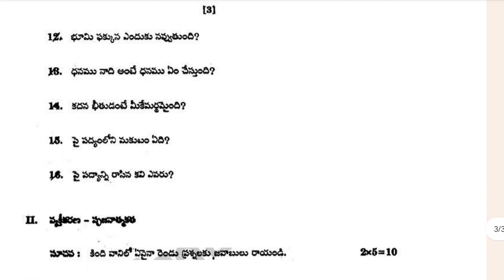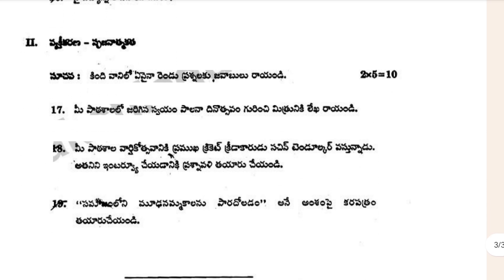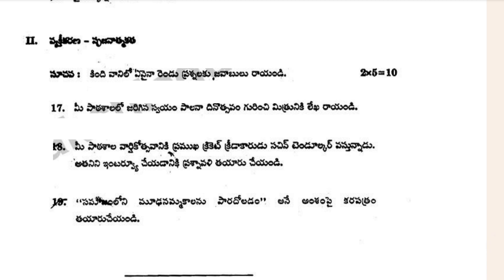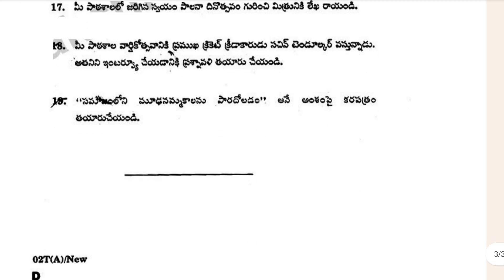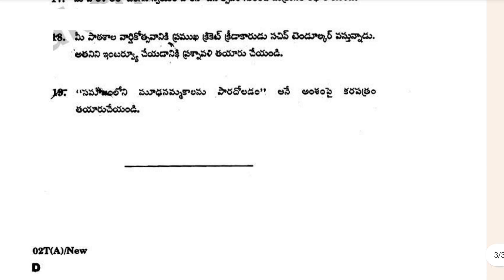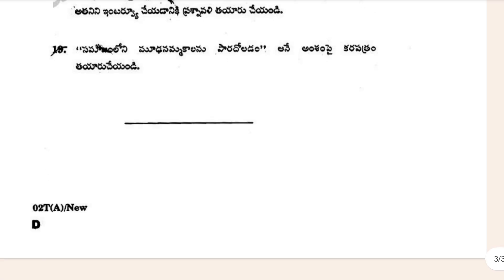In this section there are questions numbered 12, 13, 14, 15, 16. You have to write two questions only, each containing five marks — so two into five equals 10 marks.